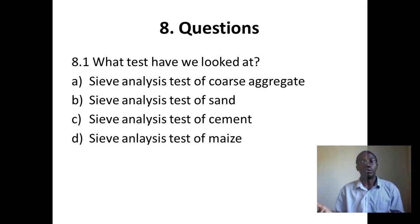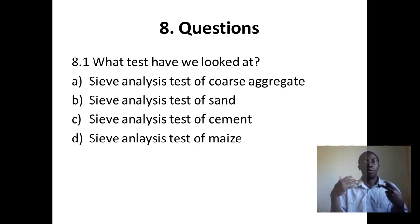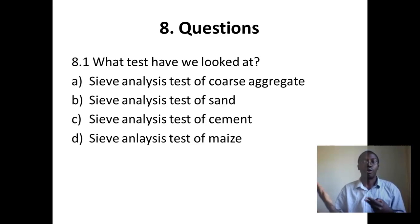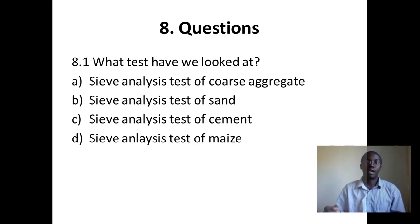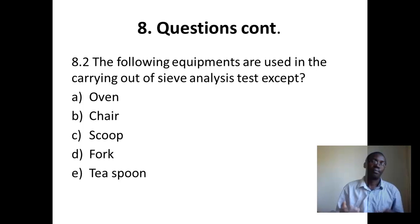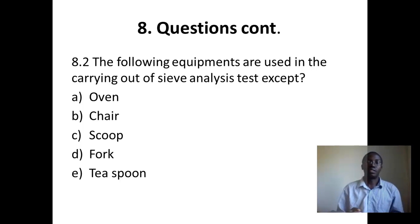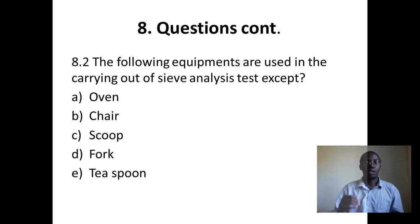Now let us look at the questions. Question 1: What test have we looked at? A) sieve analysis test of coarse aggregate; B) sieve analysis test of sand; C) sieve analysis test of cement; D) sieve analysis test of maize. Question 2: The following equipment are used in carrying out the sieve analysis test, except: A) oven; B) chair; C) scoop; D) fork; E) teaspoon.